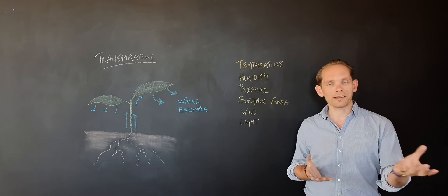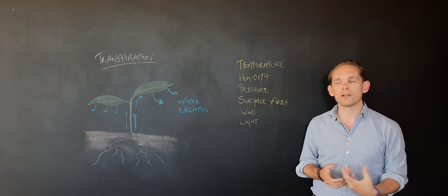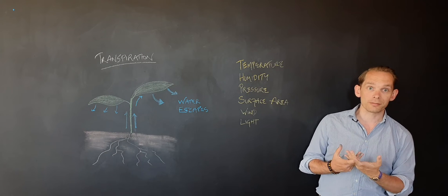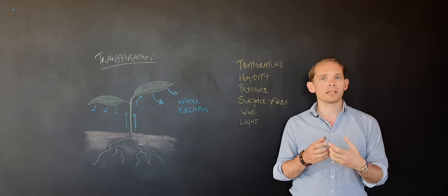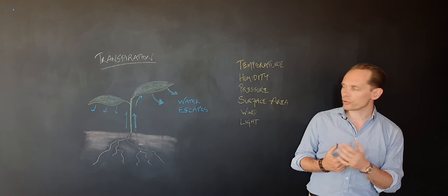The cost of that is that's an opportunity for the water in the plant to get lost through the same stomata that have been opened. So high light intensity means more transpiration, unfortunately for the plant.